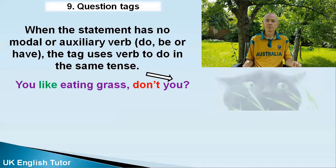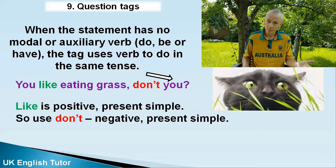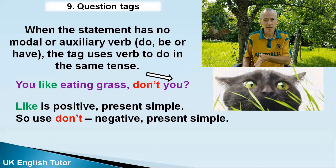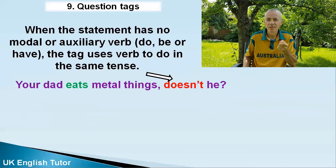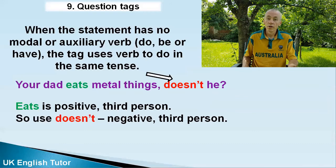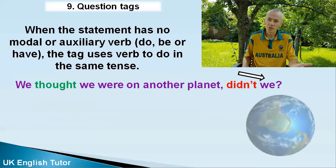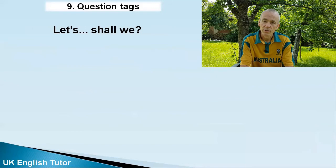'You like eating grass, don't you?' — 'like' is positive present simple, so we use 'don't,' which is negative present simple. 'Your dad eats metal things, doesn't he?' — 'eats' is positive third person, 'doesn't' is negative third person. 'We thought we were on another planet, didn't we?' — 'thought' is positive past simple, 'didn't' is negative past simple.